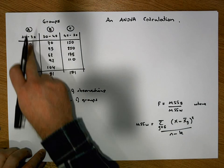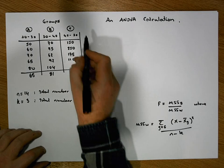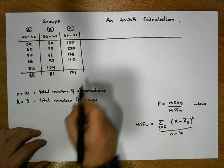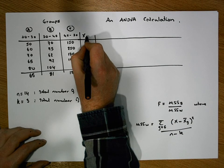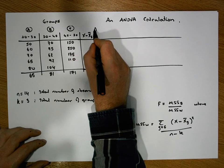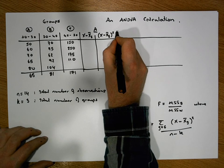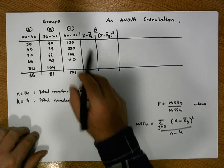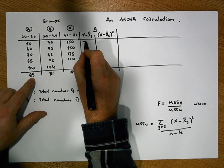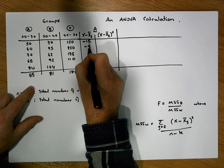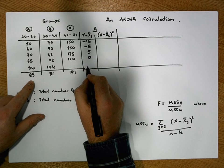Now for each group we measure how far each observation is away from the respective group mean, and square that. For group A, we calculate x minus x-bar g: 50 minus 65 gives minus 15, 60 minus 65 gives minus 5, 70 minus 65 gives 5, 65 minus 65 gives 0, and 80 minus 65 gives 15.